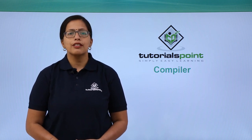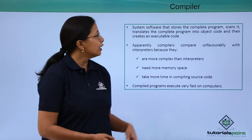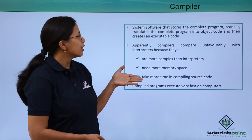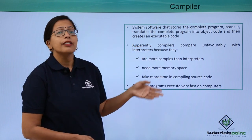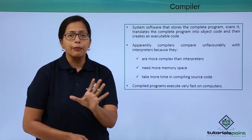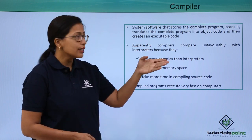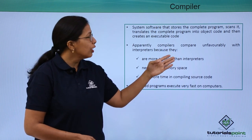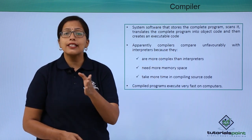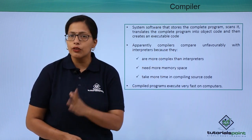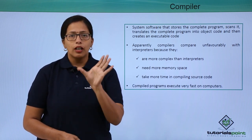In this video we are going to discuss compilers. So let's see what a compiler is. It is a system software that stores the complete program that we have written in the high level language, scans it, translates into object code, and then creates an executable code. What is an executable code? A code or program that can run straight away is called an executable code.